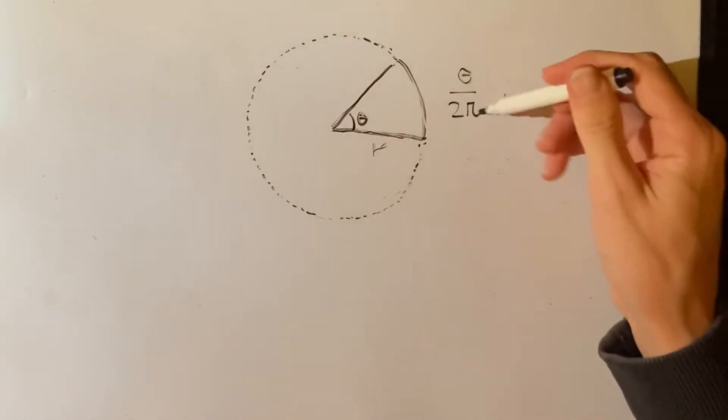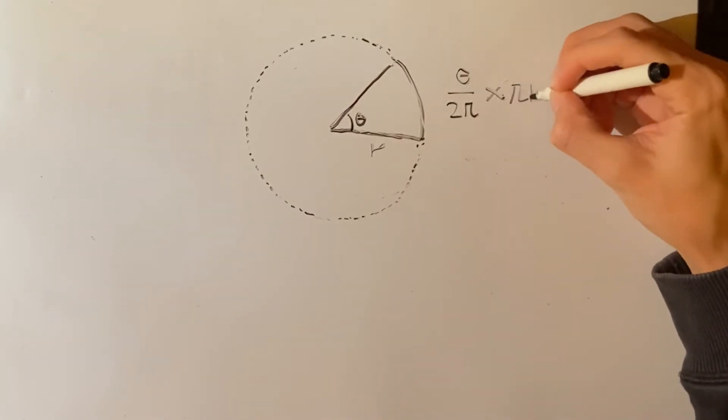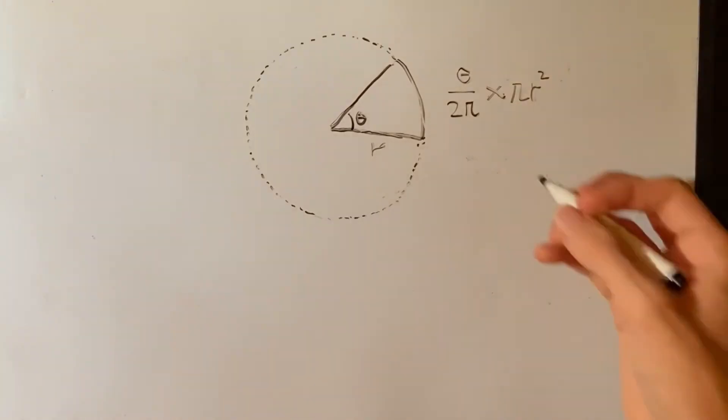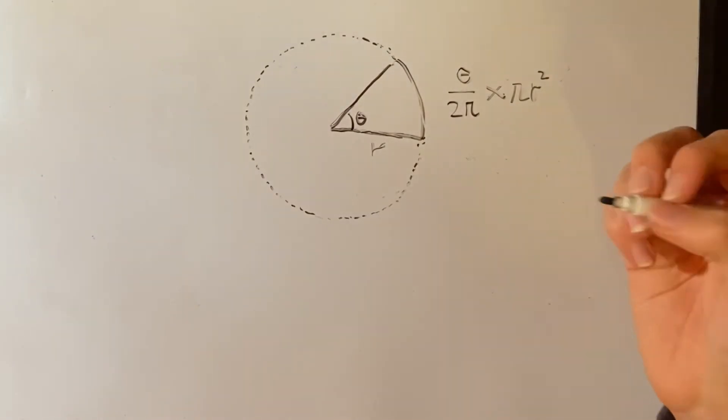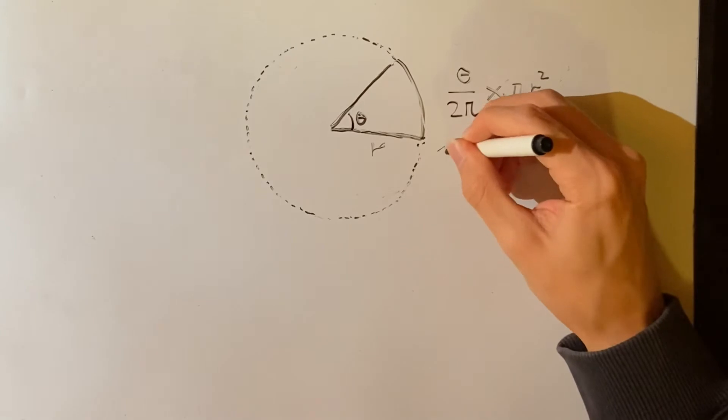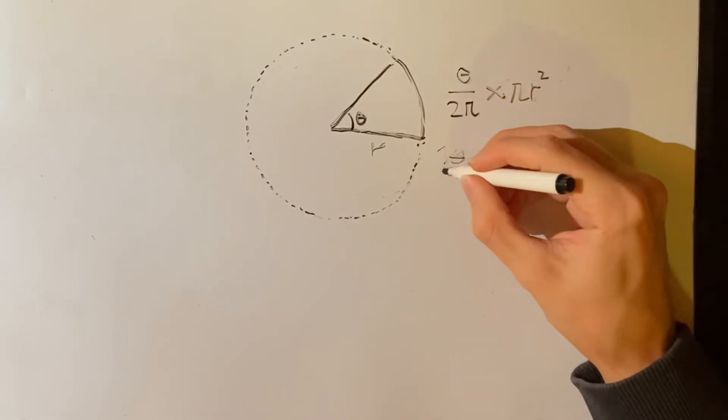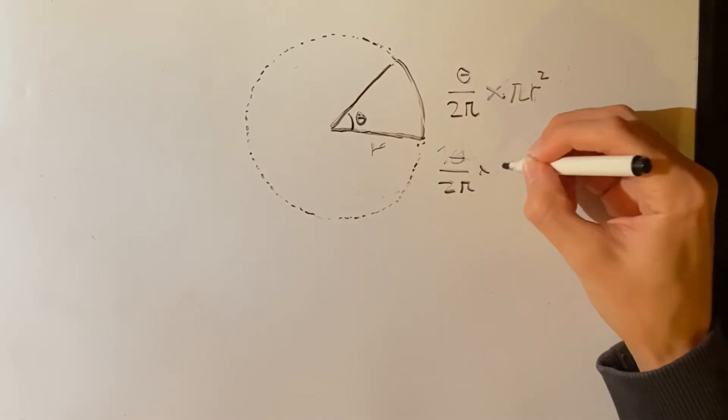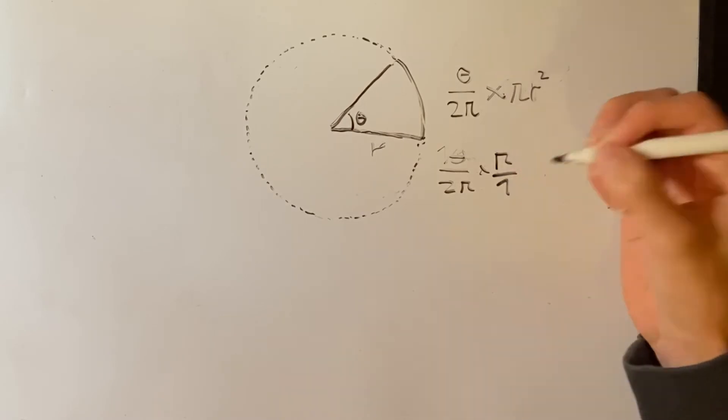So this is the same principle, pi r squared. So then this here can be rewritten as theta over 2 pi times pi divided by 1.